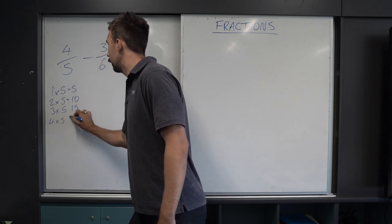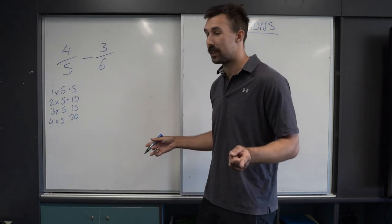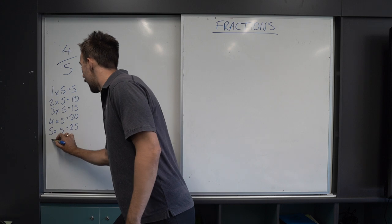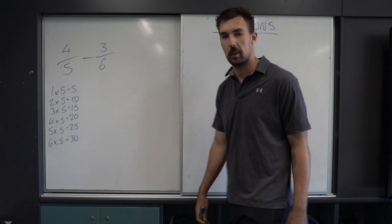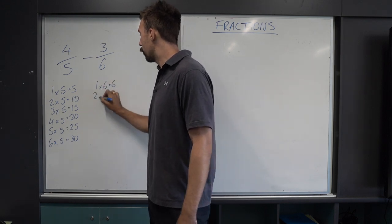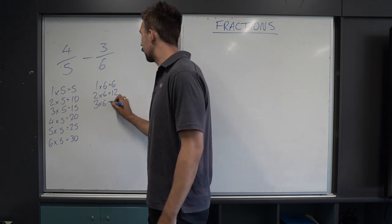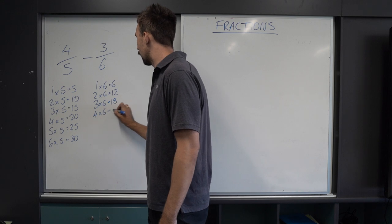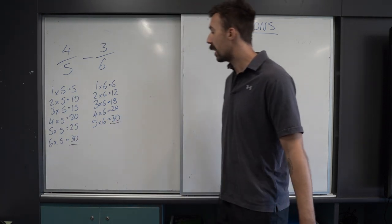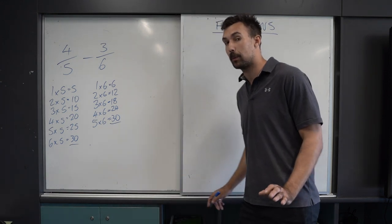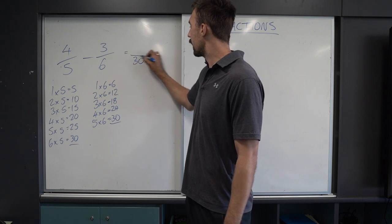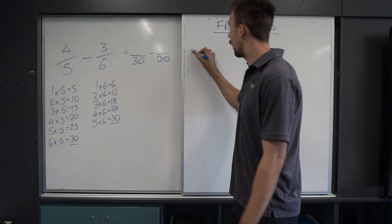Multiples of 5: 1×5=5, 2×5=10, 3×5=15, 4×5=20, 5×5=25, 6×5=30. Now multiples of 6: 1×6=6, 2×6=12, 3×6=18, 4×6=24, 5×6=30. There it is — 30 is the lowest common multiple. So we convert to over 30, take away over 30, and our answer will be over 30.